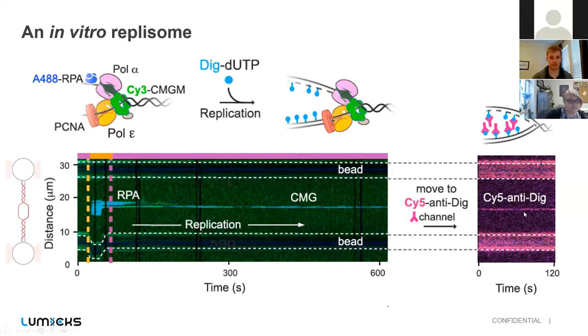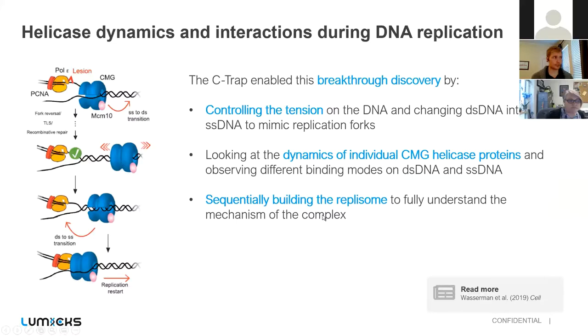And so to conclude, they were able to build a model I won't talk about because we have other applications to get through. But this was all possible because the C-TRAP enables you to do things like control the tension of your DNA to change it from double-stranded to single-stranded DNA. And it allows you to look at individual molecules, such as this helicase protein, and observe its spatial temporal activity. And finally, with the U-Flux microfluidic device, you can sequentially build the components and test them in a very methodical way.